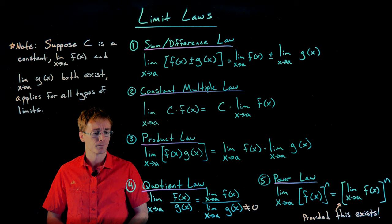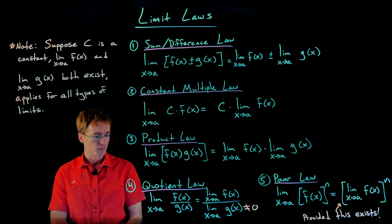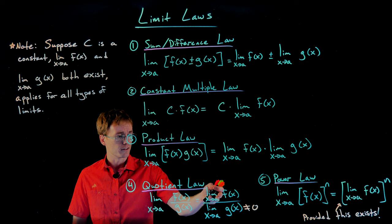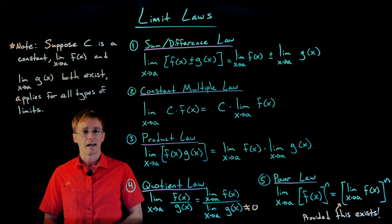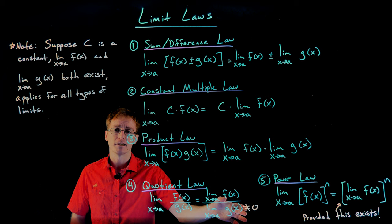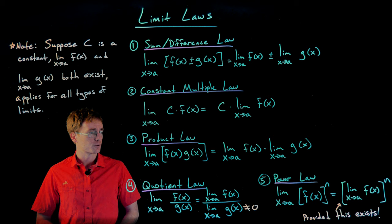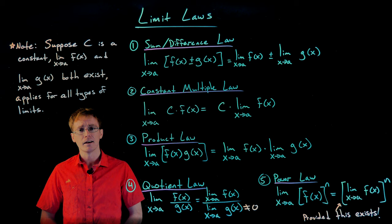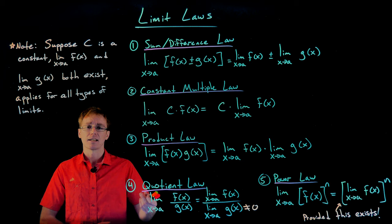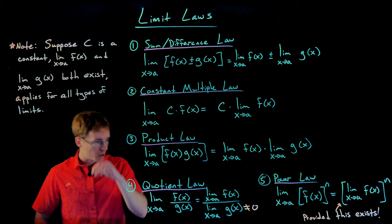Number four on our list is the quotient law for limits. It says the limit as x approaches a of f divided by g can be approached by taking the limit of the numerator and dividing that by the limit of the denominator. There's one extra condition: the denominator can't have the limit approach zero, because we don't want to divide by zero. The last one we have is the power law for limits: if you're taking the limit as x approaches a of some function raised to some power, you can pass the limit inside, take the limit of the function, and then raise it to that power — provided that limit exists as a real number.